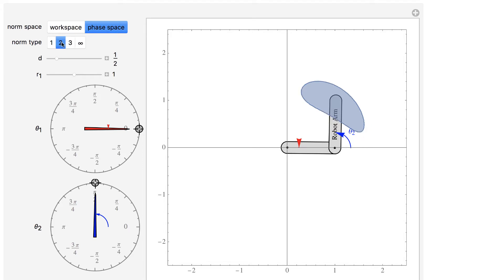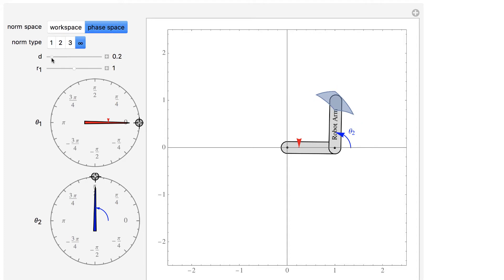In each space, you can choose the order of the norm, the maximum distance d, and change the relative lengths of the robot joints.